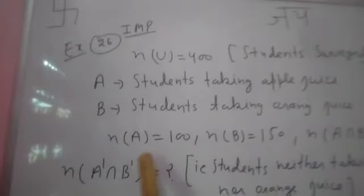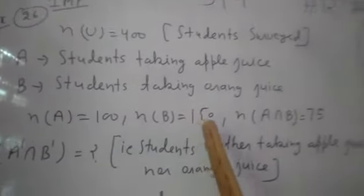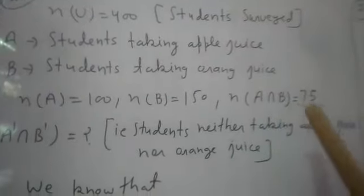Now, this is given to you: n(A) is equal to 100 and n(B) is equal to 150 and n(A intersection B) is equal to 75.